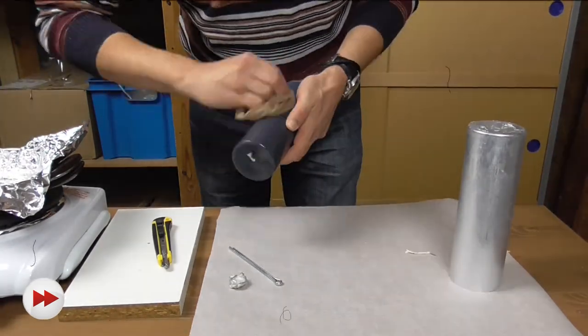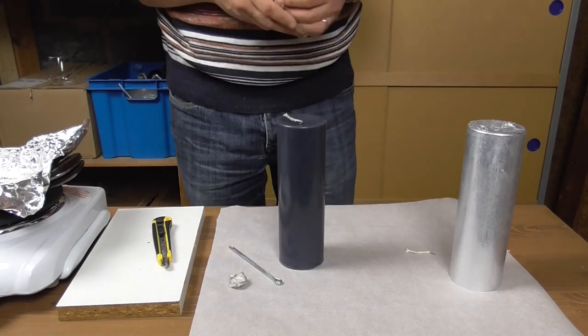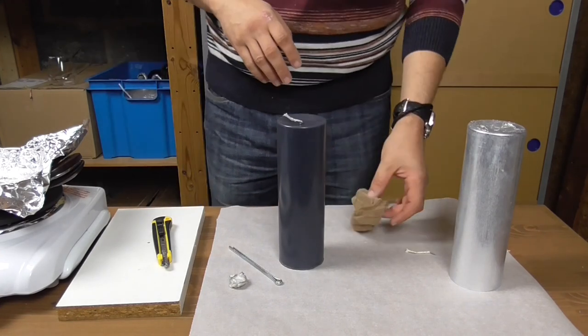Wipe the whole surface of your candle, top included, with the pantyhose. After a couple of minutes, you will notice that the color of the wax is now perfectly uniform.